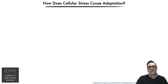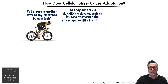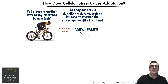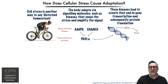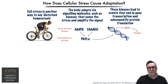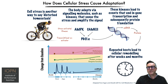So how does this cellular stress actually result in adaptation? Cell stress is another way to describe disturbed homeostasis. The body adapts by signaling molecules such as kinases that sense the stress and amplify the signal. These kinases lead to events that end in gene transcription and subsequently protein translation. Repeated bouts of this process will lead to cellular remodeling after weeks and months.